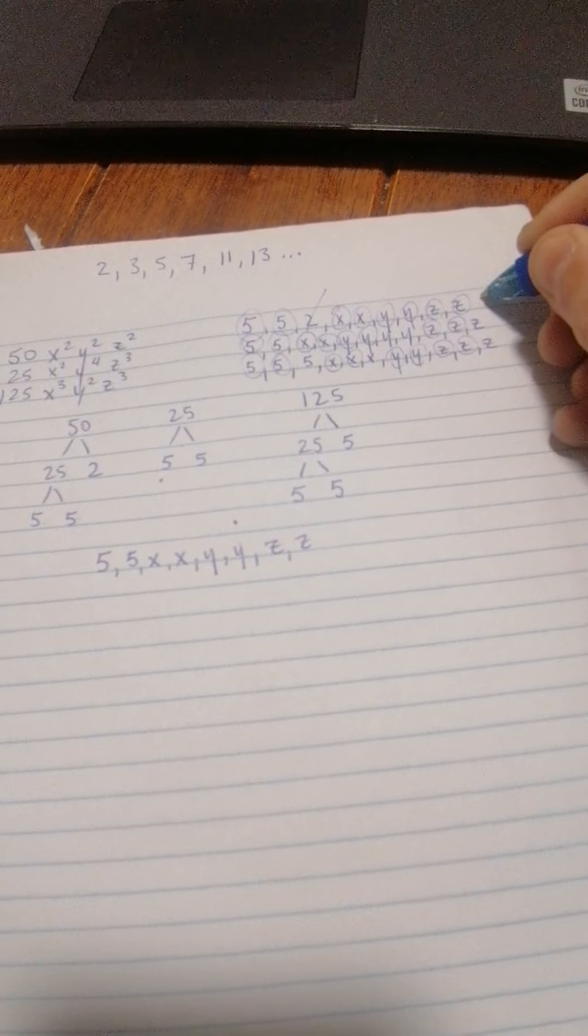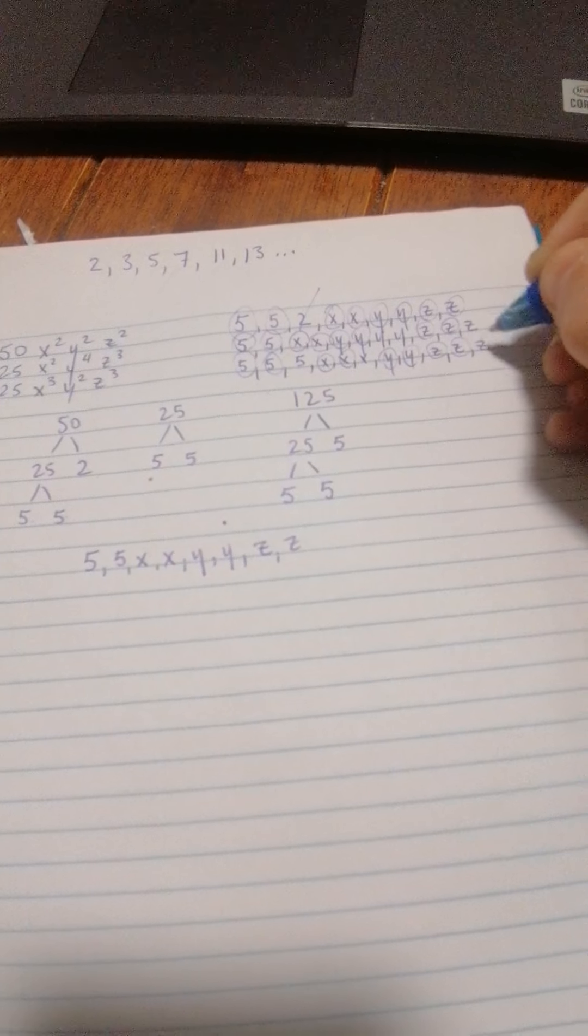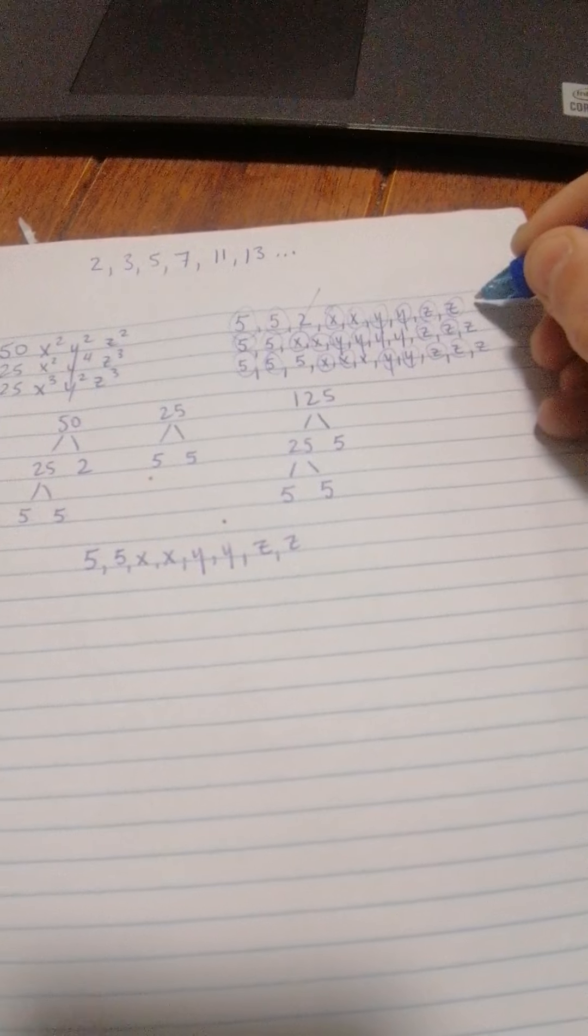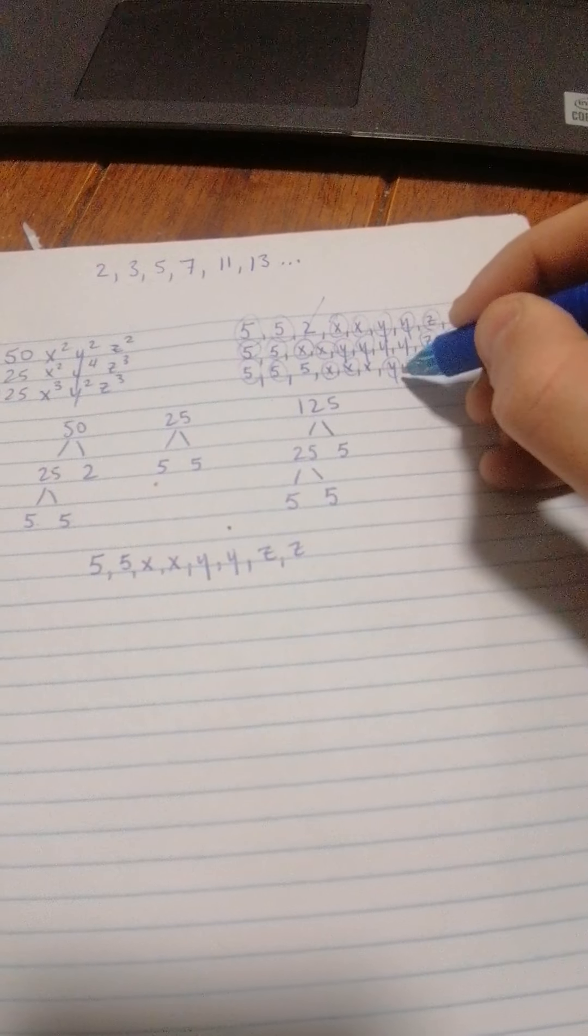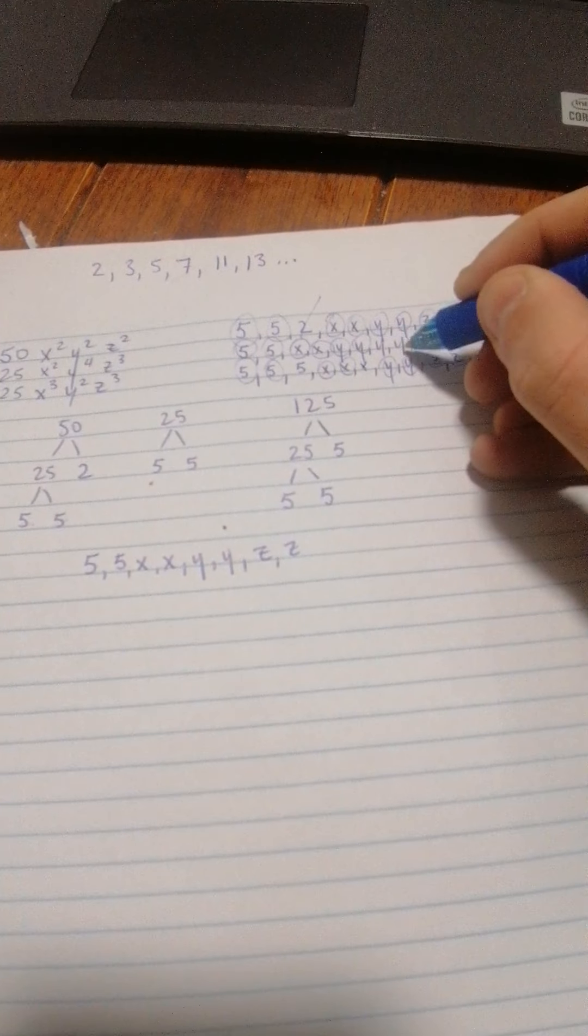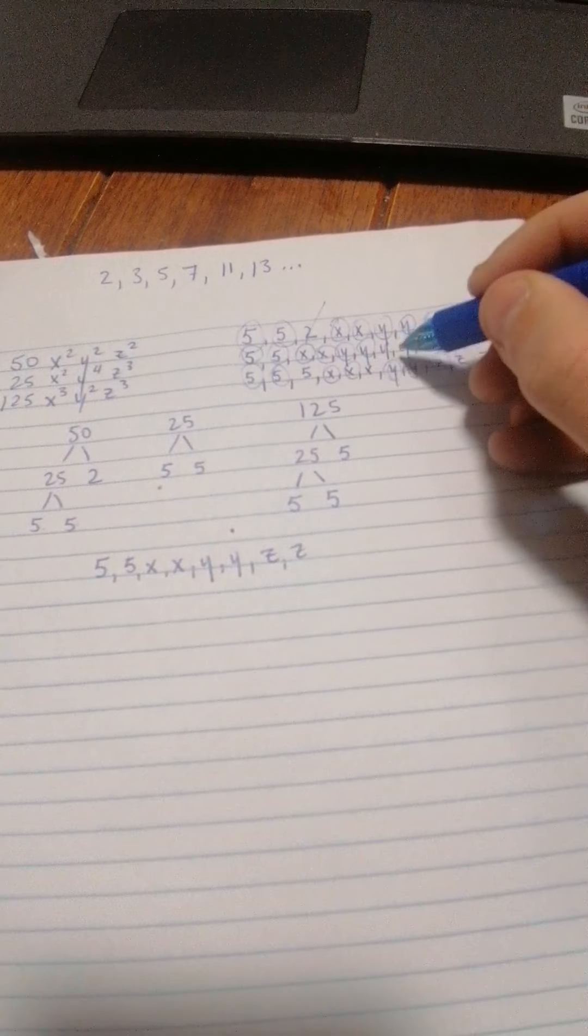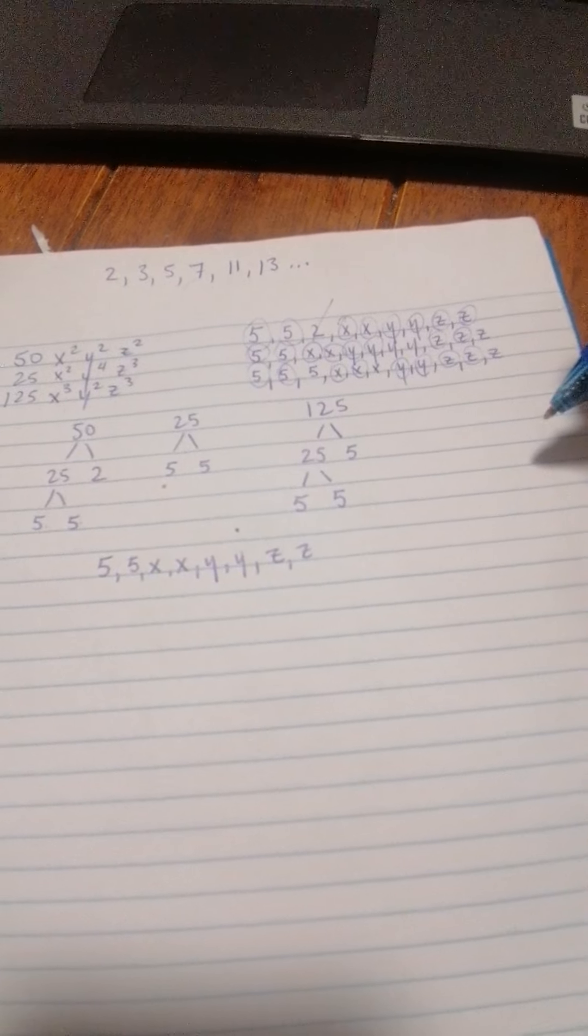But look, there's some leftovers, right? There's these two z's here, but this one didn't have a third z to give. Likewise, there's these two y's here, but the other two polynomials didn't have enough y's, so they don't have that in common. So there's a couple things in here we're going to have to leave out because they don't have it in common.